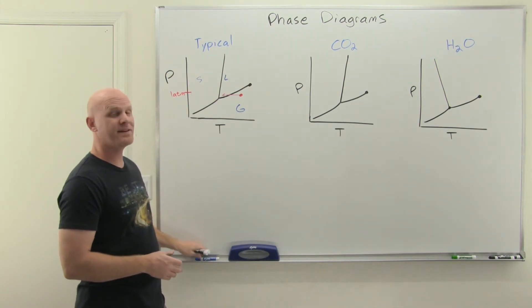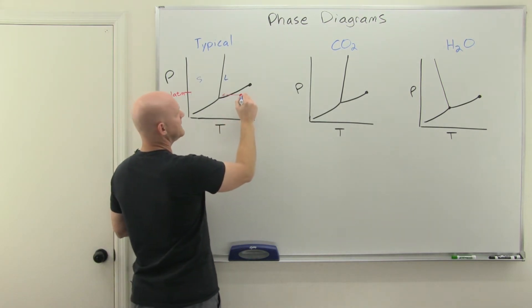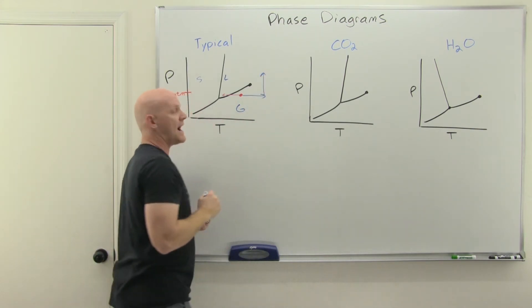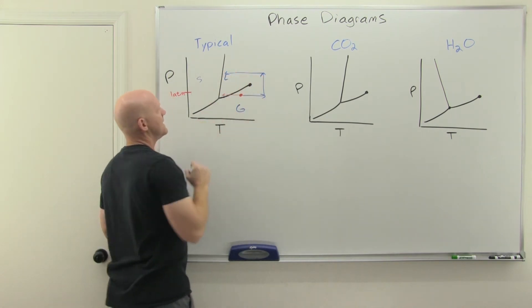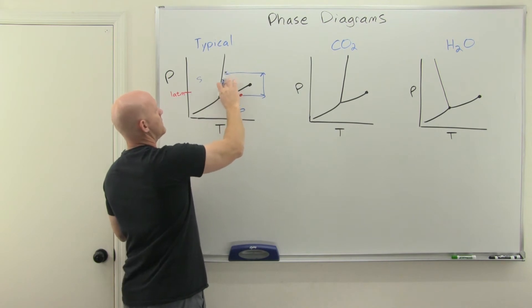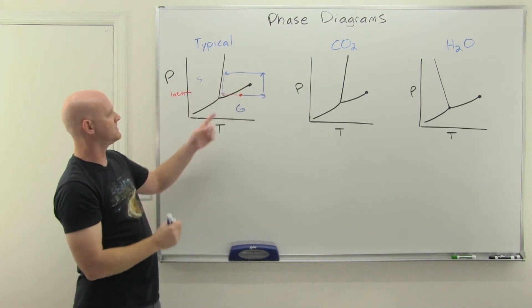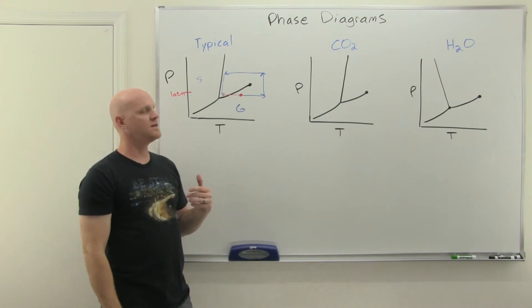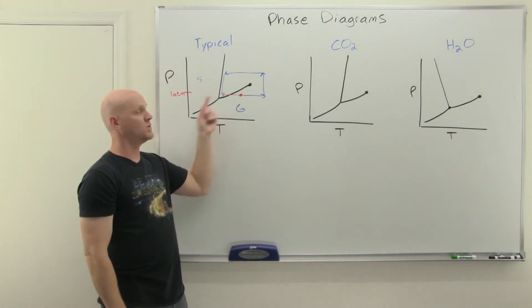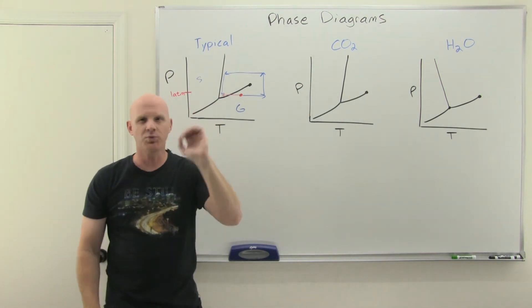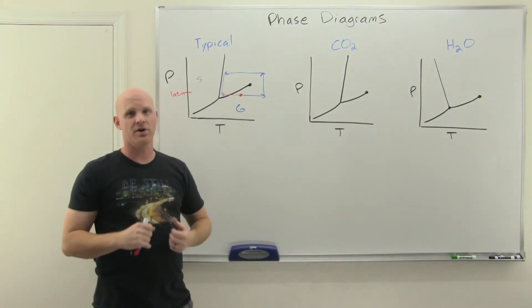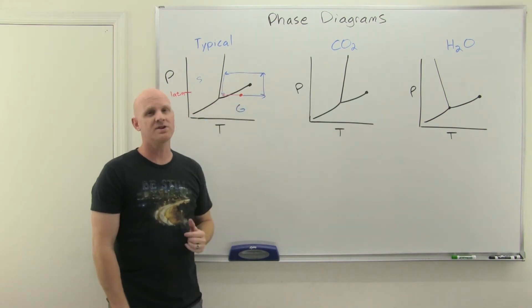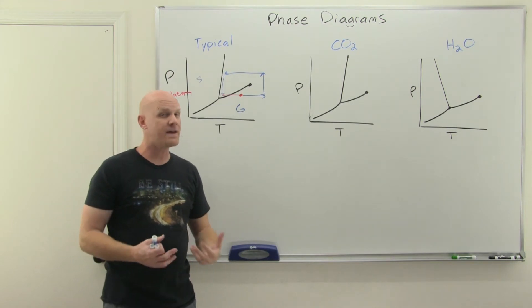Now consider a different path: instead of cooling the gas down, we heat it up, jack up the pressure past the critical point, lower the temperature, then lower the pressure back down to end at the same final liquid state. The question is: when did the gas turn into a liquid? There was no single point with a big change in volume like when we crossed the line. The critical point is the temperature beyond which there is no liquid-gas line of equilibrium — no liquid-gas phase transition.